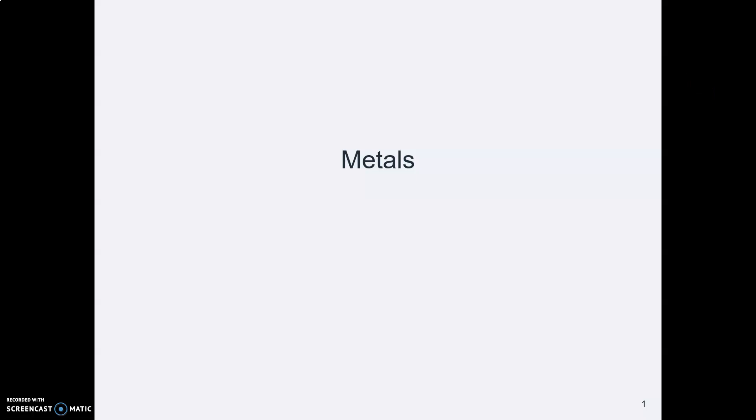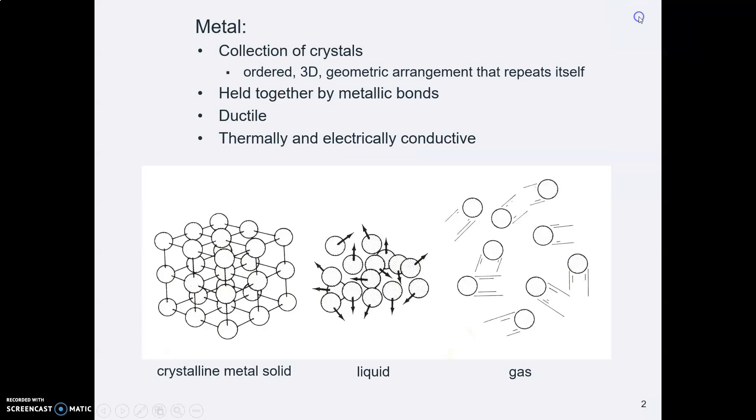Let's look at some of the kinds of metals you might use in design and manufacturing and how you describe them, how you designate what they are.